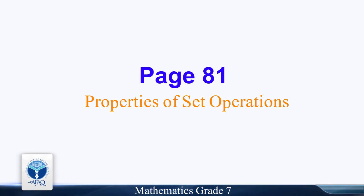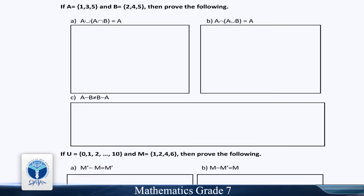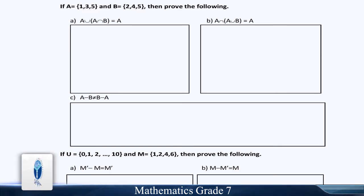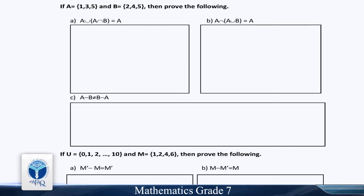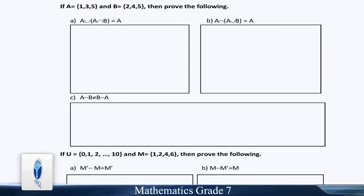Page 81: Properties of set operations. If A = {1, 3, 5} and B = {2, 4, 5}, then prove the following: Part A: A union (A intersection B) = A. Part B: A intersection (A union B) = A. Part C: A minus B does not equal B minus A.